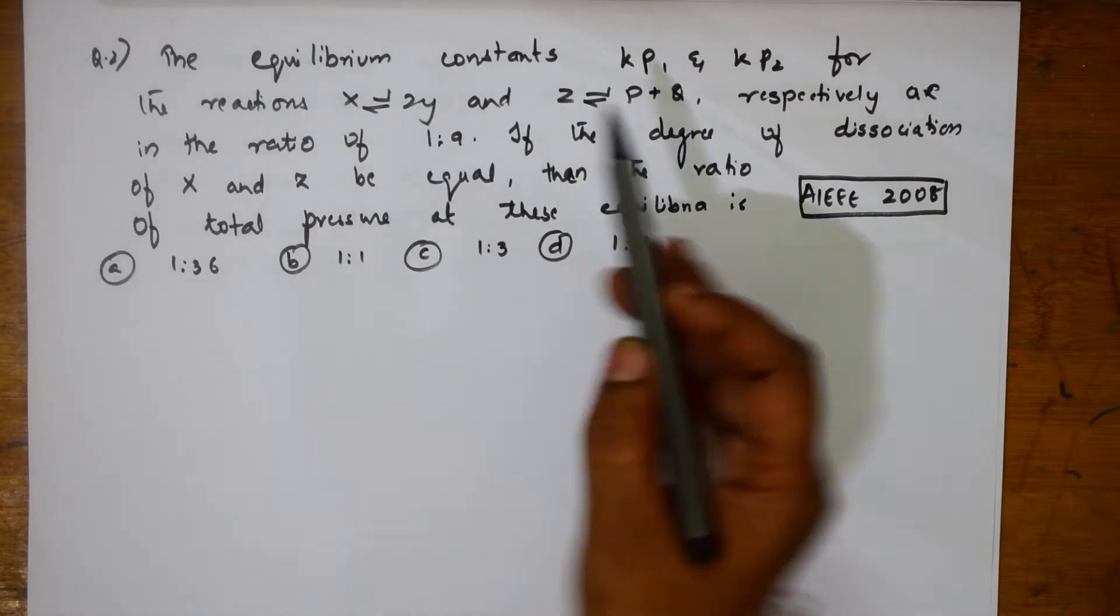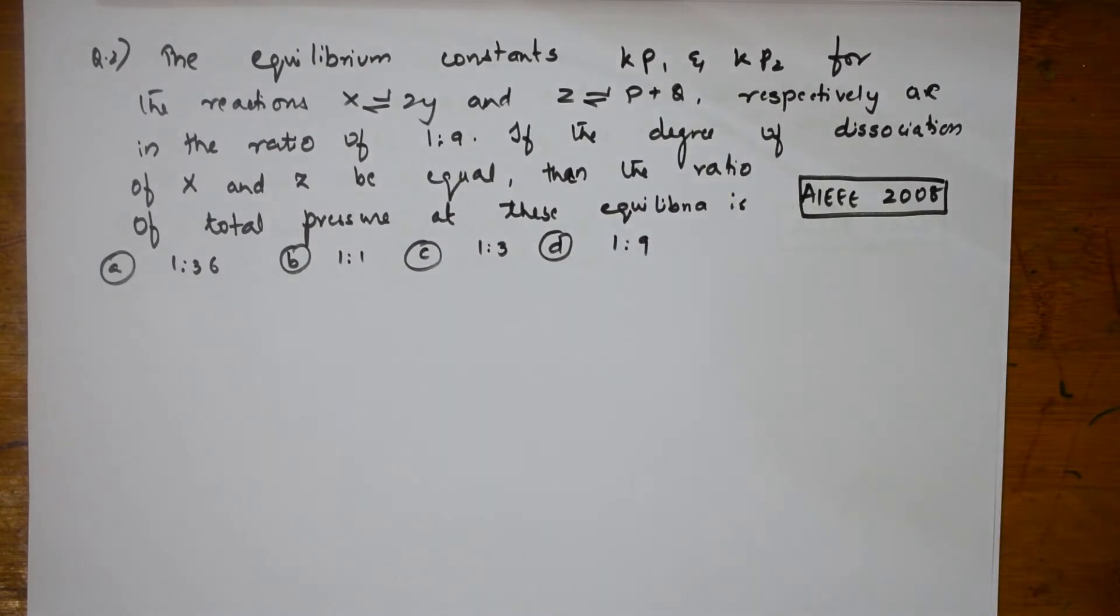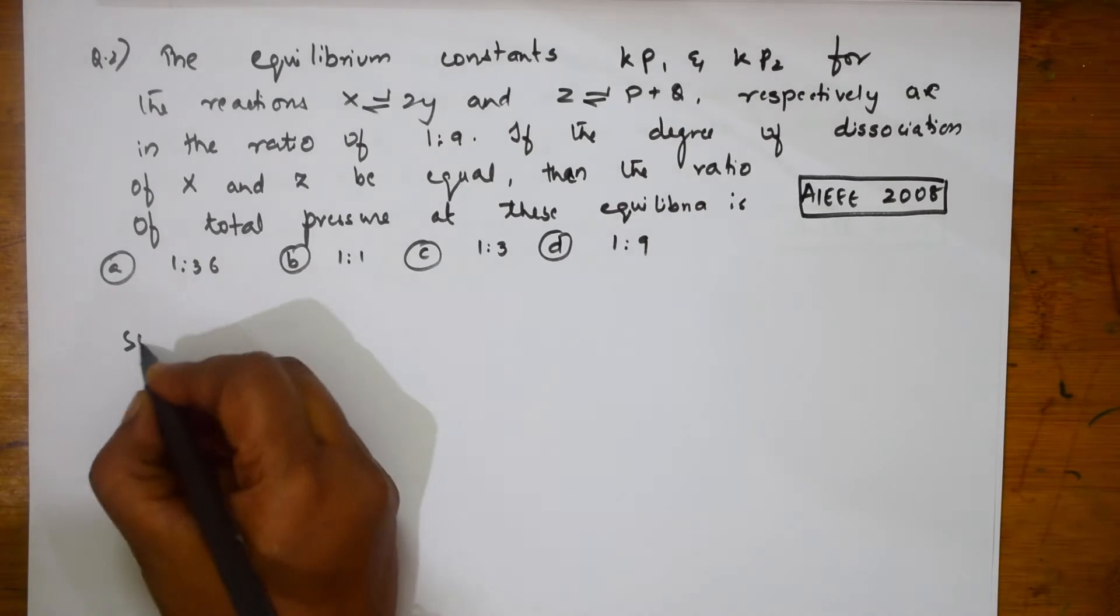X is in equilibrium with 2Y, Z in equilibrium with P plus Q, respectively at the ratio 1 is to 9. If the degree of dissociation of X and Z be equal, then the ratio of total pressure at equilibrium is asked. They have spoken in terms of pressure, so now you have to be careful while solving that, you are going to take in terms of partial pressures.